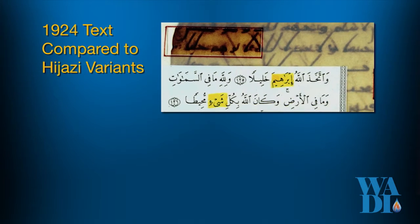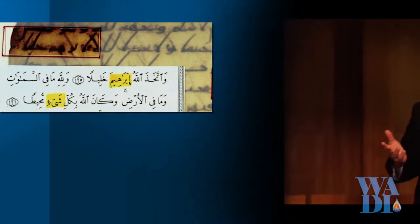In the last example, the word in the manuscript actually contains a long Aleph where there is not one at all today. Sometimes the palimpsest show additions of words that are not in today's Quran, and sometimes words or phrases are omitted in the manuscripts that are included in today's Quran.